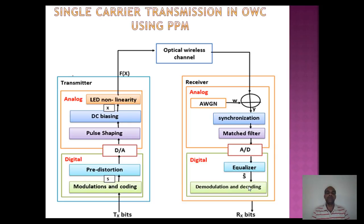This shows the transmission and receiver side. From the transmitter, digital-to-analog conversion is performed, and the data is transmitted through the optical channel. At the receiver, analog-to-digital conversion is performed. Let us now look at the system model.